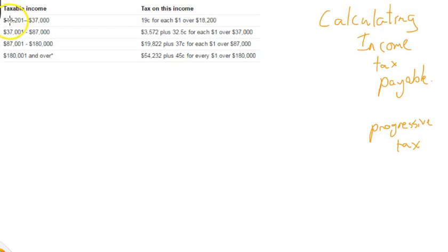If you earn $18,201, you pay $0.19 for each dollar over $18,200. So if you earn $18,201 exactly, you'll pay $0.19. And you pay $0.19 for every dollar until you reach $37,000 in the year. If you earn $37,001, the tax rate changes.